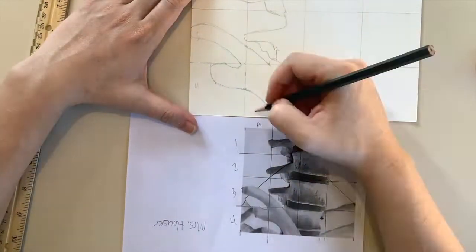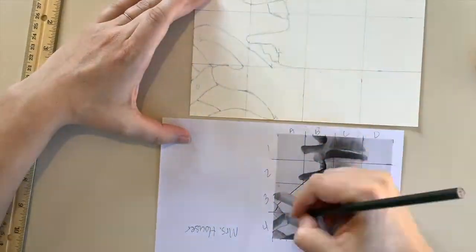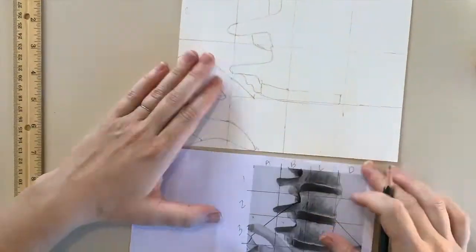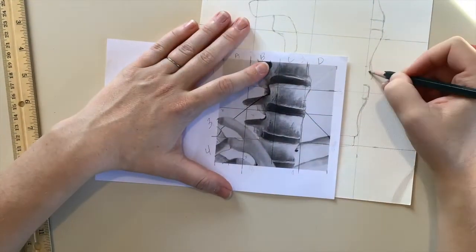Then I flip it right back upside down, and for me that's a lot easier because my brain is not necessarily noticing this as a skeleton—it's looking at it as basic shapes.